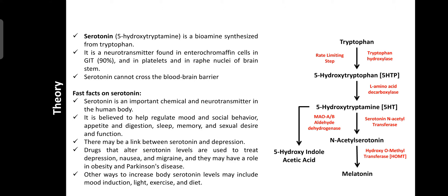Serotonin is a neurotransmitter found in enterochromaffin cells in GIT — 90% — as well as in platelets and raphe nuclei of the brain stem. In GIT, it plays an important role in the regulation of appetite as well as GIT motility. In platelets, serotonin is involved in blood coagulation by enhancing platelet aggregation. And in the brain, it is used as a neurotransmitter involved in transmission of information from one neuron to another regarding mood, emotions, and many others.